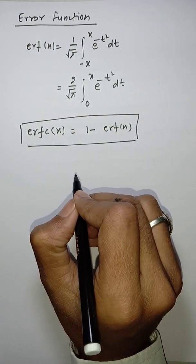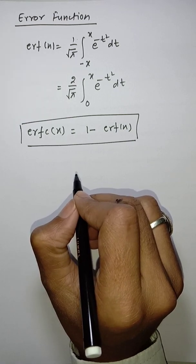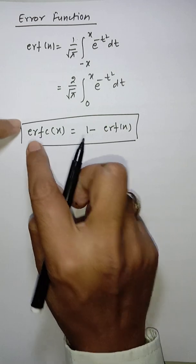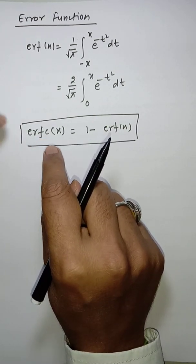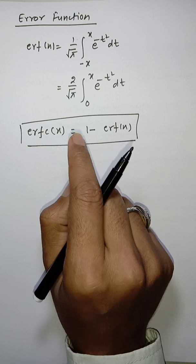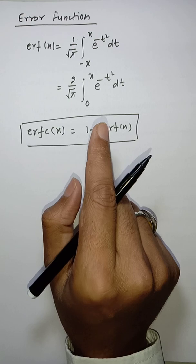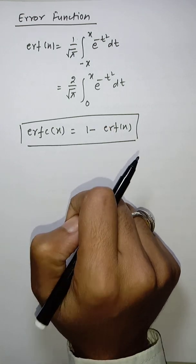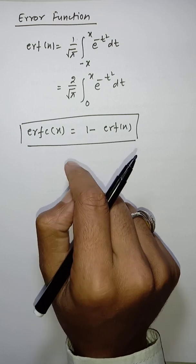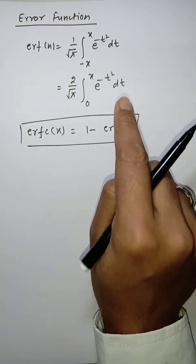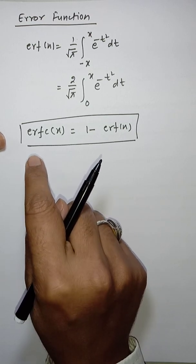We are discussing the error function because of its importance. The error function and the complementary error function are special functions which appear in the solution of the diffusion problem in heat, mass, and momentum transfer. It is also very important in probability theory and the theory of errors. Now we are going to derive the Laplace transform of the error function.